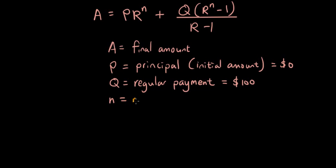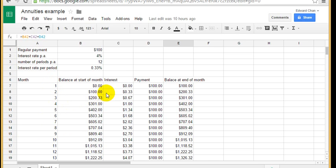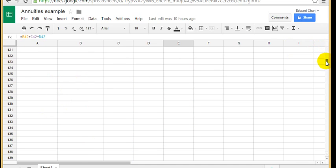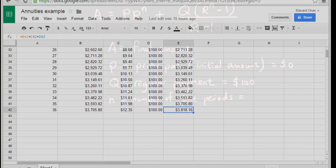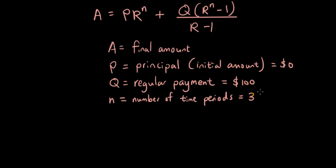Our final amount is what we're trying to find in our situation and we want to now talk about N. N represents the number of time periods and in our case we actually have 36 periods. Remember our spreadsheet we calculated how much money we'll have at the end of 36 months. So the number of time periods is 36 and the R is the growth rate per period.